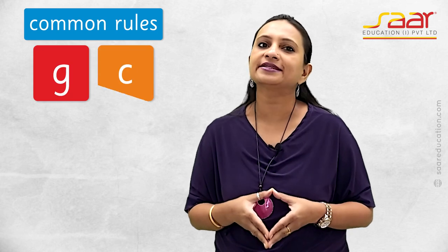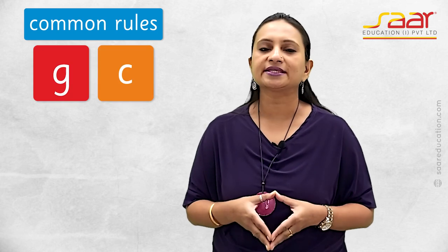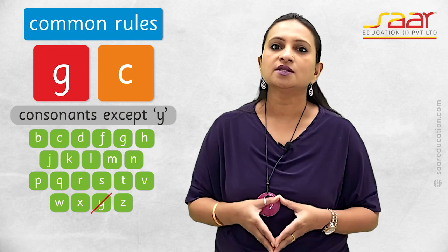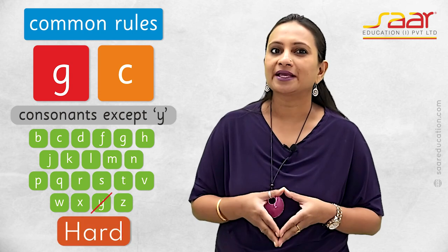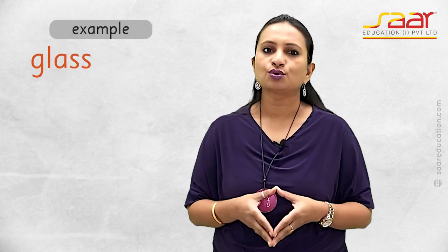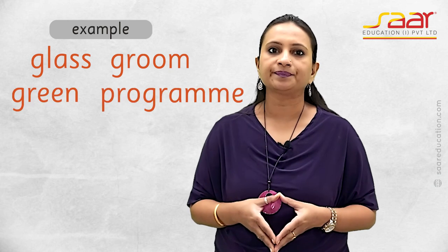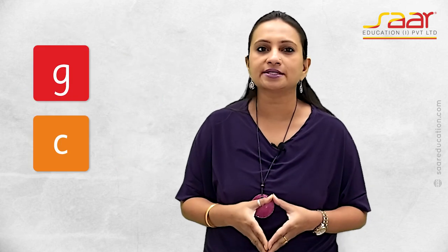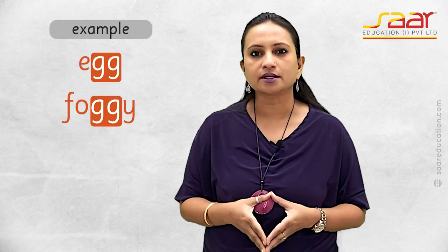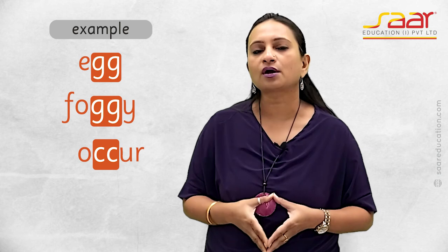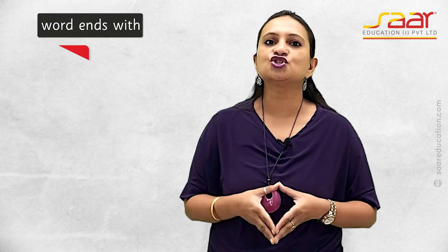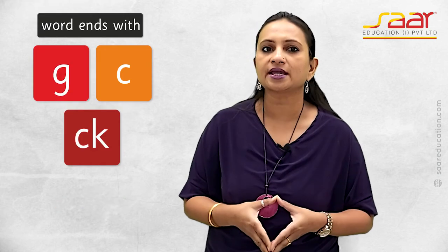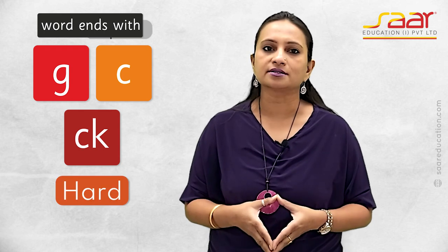Some common rules for G and C: if G or C is followed by a consonant, the sound is hard — examples: glass, groom, green, program, class, fact, clock, and climb. If G or C is doubled, the sound is hard — examples: egg, foggy, occur, broccoli. When words end with G, C, or CK, the sound is hard — examples: sick, bag, magic, trick.